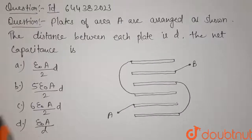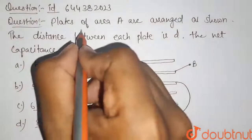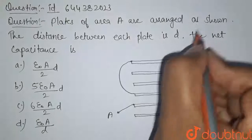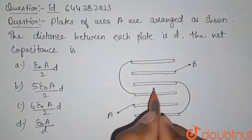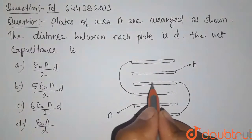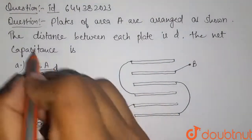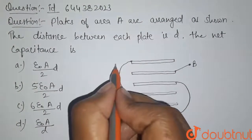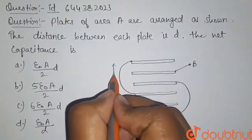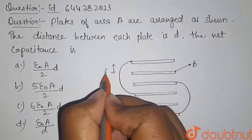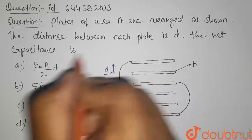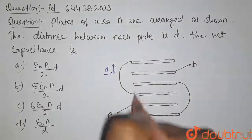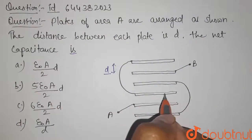Hello students, here is our question. Plates of area A are arranged as shown. The distance between each plate is D. We have to find the net capacitance.